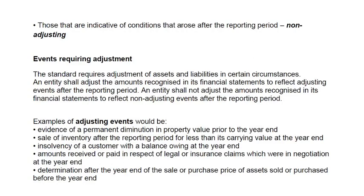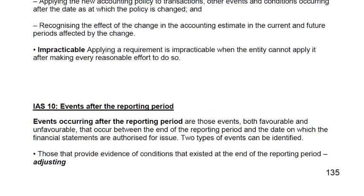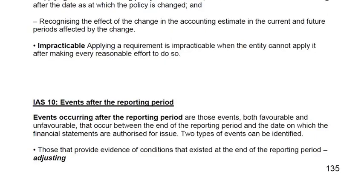Adjusting events are events that were basically likely to occur at year end. For example, there is a customer who was facing financial difficulties at year end and after the year end actually filed for bankruptcy. The bad debt, although it took place after the year end, should be recognized because the condition of its existence already existed at the statement of financial position date.